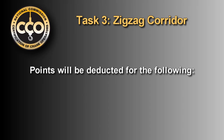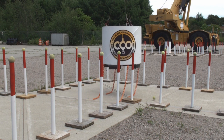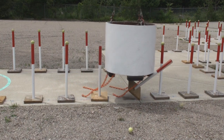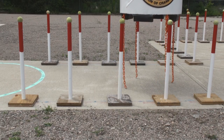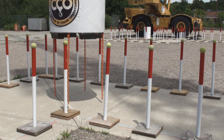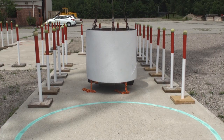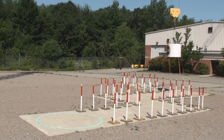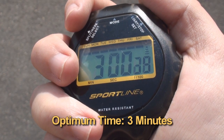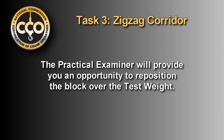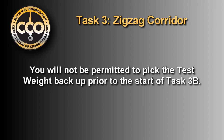Points will be deducted for the following: knocking the ball off the pole; moving the pole base off the line; knocking the pole over; chains leaving the ground; passing poles with the chains off the ground; test weight touching the ground; circumventing the course; and exceeding optimum time. Once Task 3A is complete, the practical examiner will provide you an opportunity to reposition the block over the test weight, but you will not be permitted to pick the test weight back up prior to the start of Task 3B.